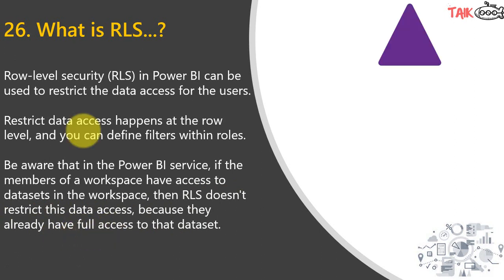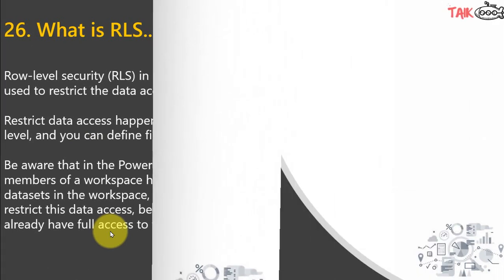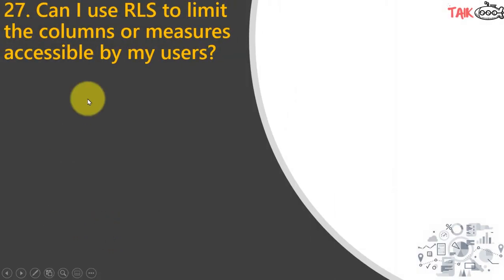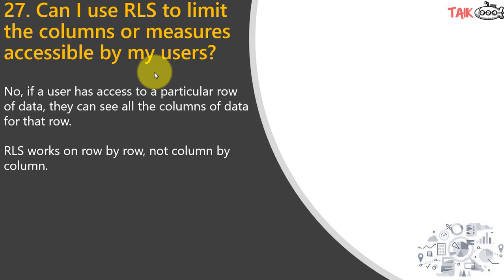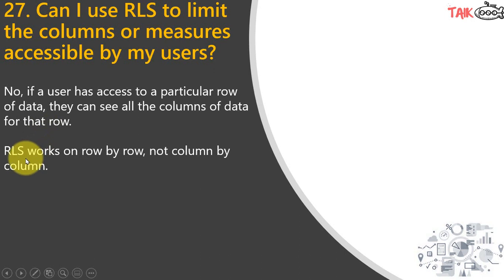I have made a video about row level security in Power BI. If you haven't seen that, just click on the link given on top of your screen. The next question is: Can I use Row Level Security to limit the columns or measures accessible by the user? The answer is no. If a user has access to a particular row of the data, they can see all the columns of that row. Row level security works row by row, not column by column.